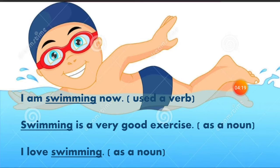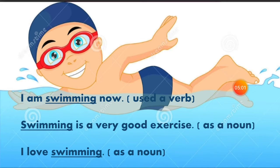In these three sentences we have the common word 'swimming.' The base form is 'swim' and you add 'ing' to it — swimming — it becomes the verb's continuous form. In 'I am swimming now,' the word 'swimming' has acted as a verb, telling us about the action that has been performed. 'I' is the subject, 'am' is the helping verb, and 'swimming' is the main verb.